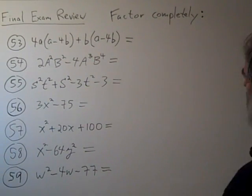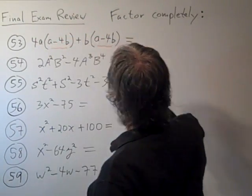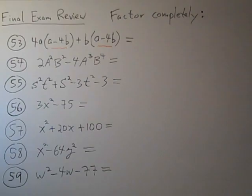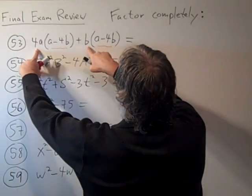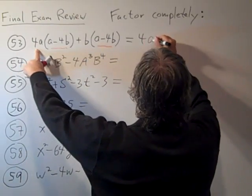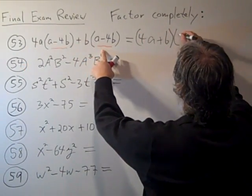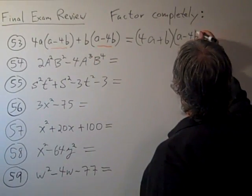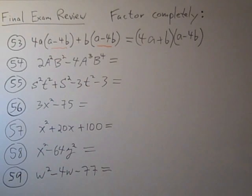For this first problem, 53, notice that there's a common factor here, this a minus 4b. So we can factor that out. What's left behind is 4a plus b, and that's times the a minus 4b that we factored out. So there it all is completely factored.